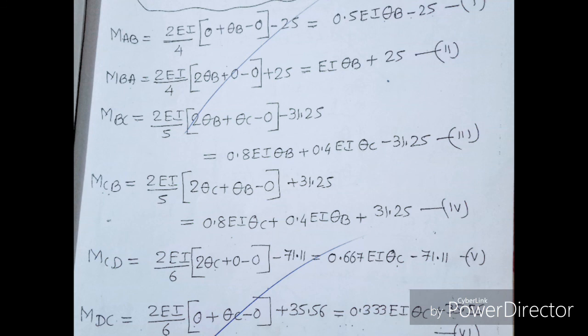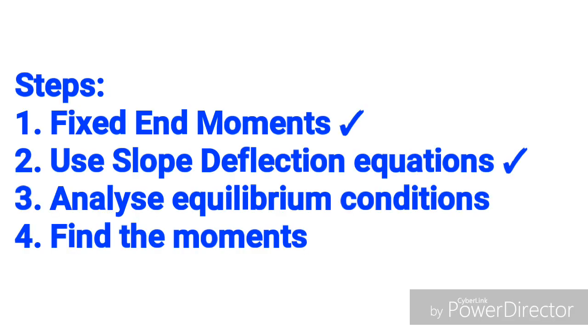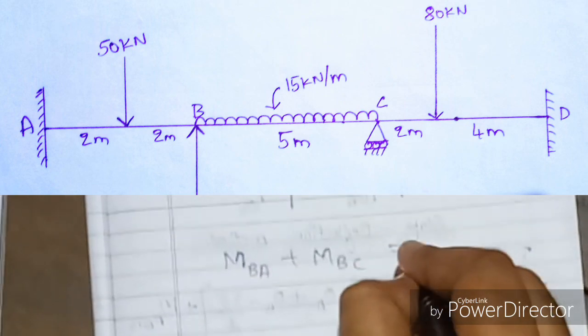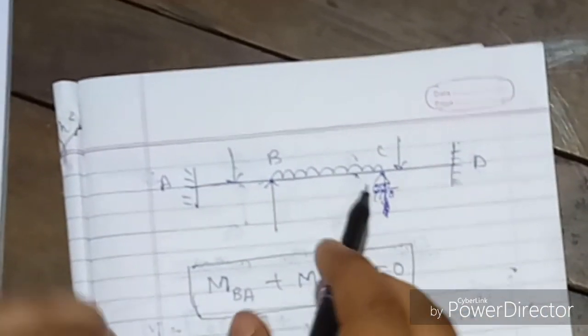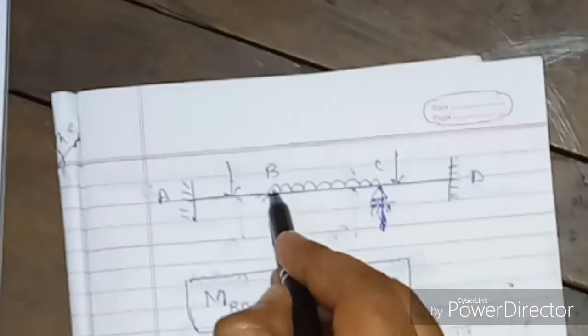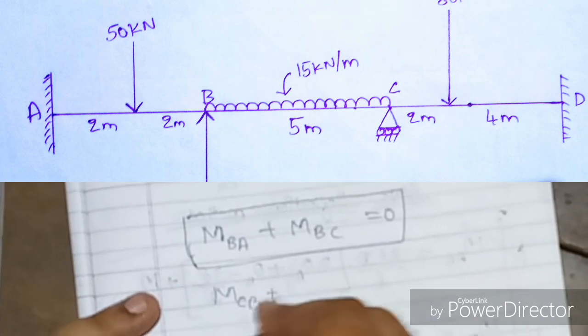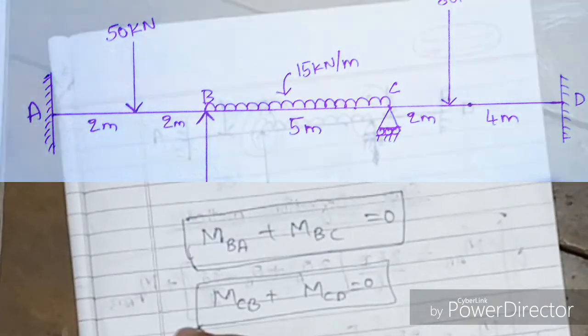The moment values for M_AB, M_BA, M_BC, M_CB, M_CD, and M_DC are in terms of unknown θ_B and θ_C. To find θ_B and θ_C, we use equilibrium conditions. At intermediate support B: M_BA + M_BC = 0. At intermediate support C: M_CB + M_CD = 0.